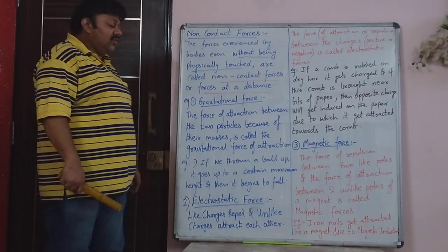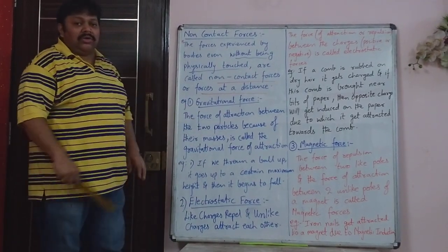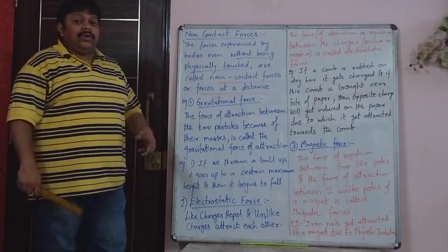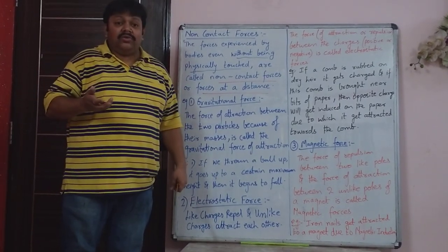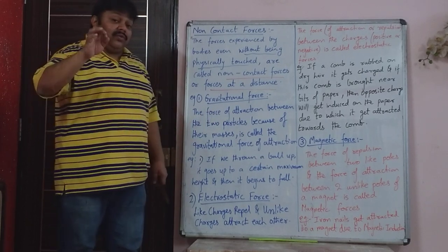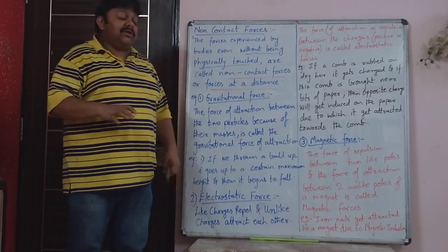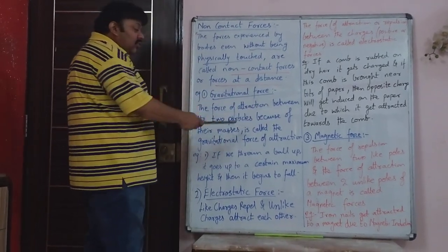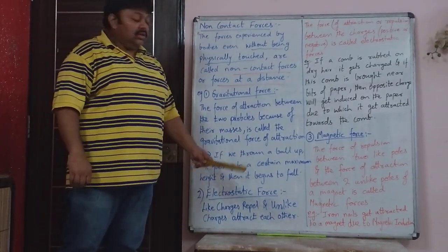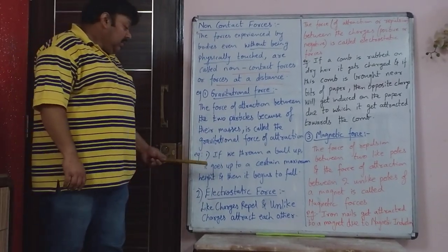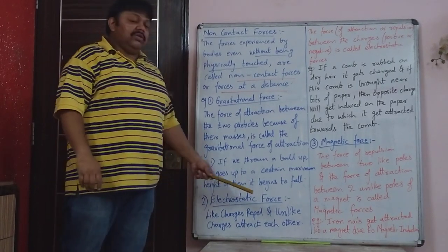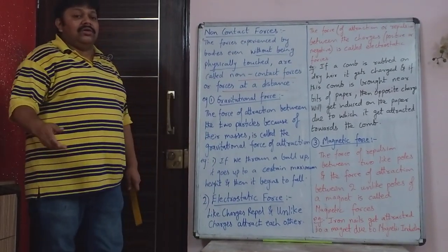Gravitational force is always an attractive force — it keeps attracting all bodies towards it. The force of attraction between two particles because of their masses is called gravitational force of attraction. For example, if a ball is thrown up, it will rise to a certain height and then fall down. This is because of the force of gravity exerted by the earth on the ball.